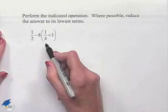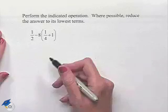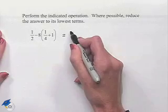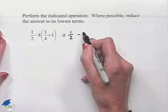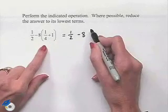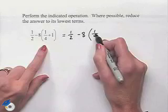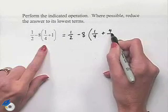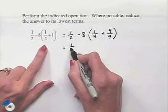We have 1/2 minus 8 times (1/4 plus 1). Let's begin by taking 1/2 minus 8. We can add 1/4 plus 1 by recognizing that 1 is going to be equal to 4/4. Now rewriting this, we have 1/2 minus 8 times 5/4.